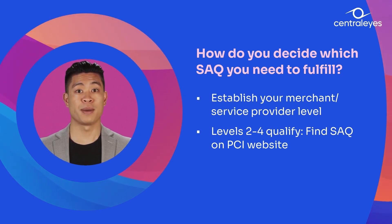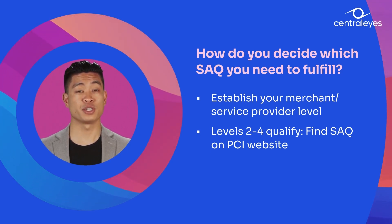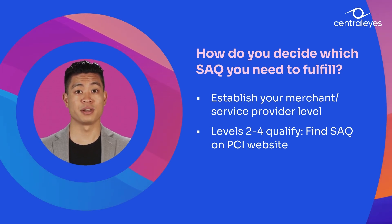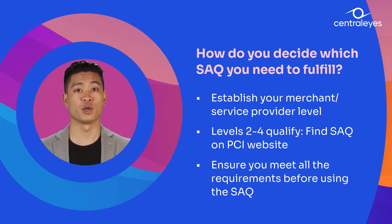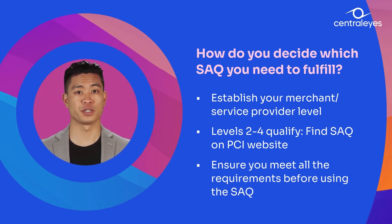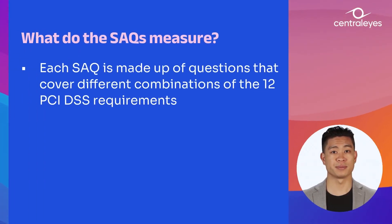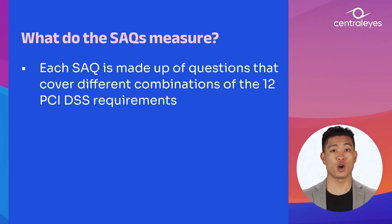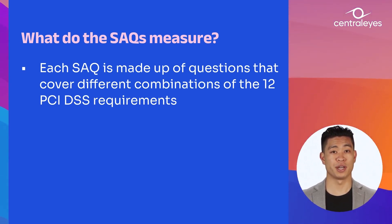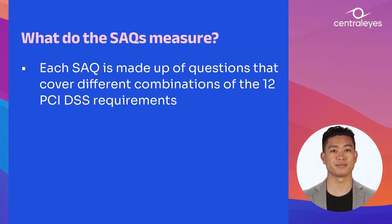After determining the level you operate at, you can see which SAQ you need to take on the PCI website. The PCI website recommends that entities ensure they meet all the requirements for a particular SAQ before using it. Each SAQ is made up of questions that cover different combinations of the 12 PCI DSS requirements. Some of the SAQs will include questions that assess all 12 requirements, whereas some will assess fewer, depending on which requirements are relevant according to the number of transactions and methods used by merchants.